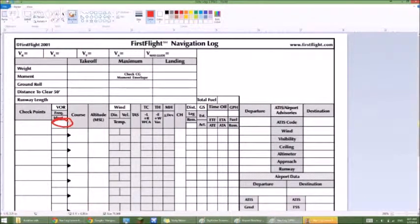If you have a checkpoint that's a river, it's not going to have a frequency because it doesn't have a VOR, so you just put an X. Same with the identifier, you just put an X. So the frequency goes in this box.